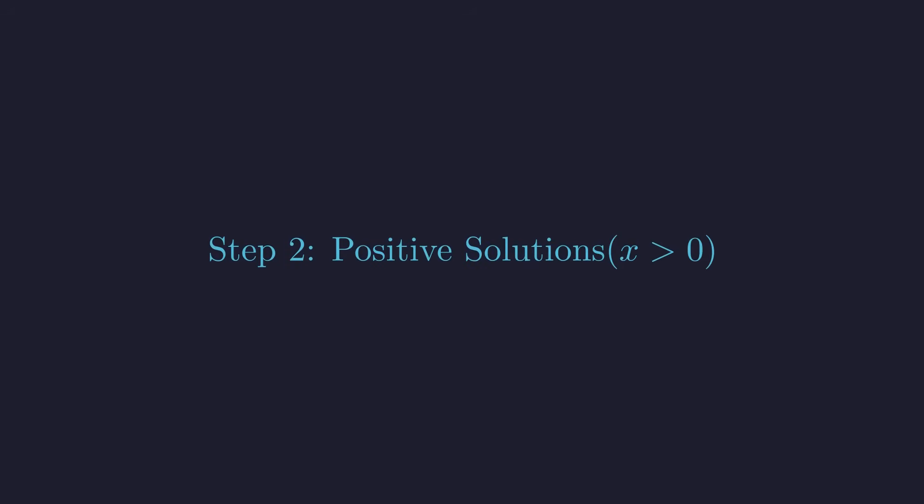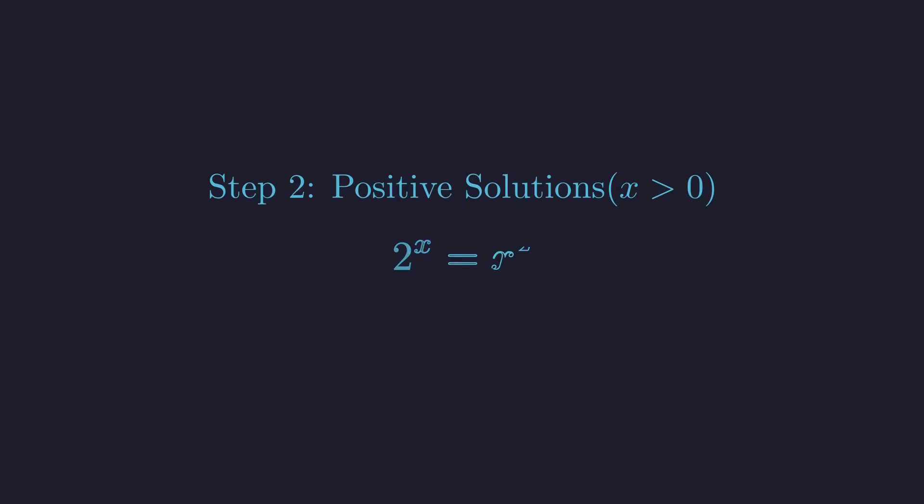Now let's tackle the positive domain, where x is greater than 0. This is the friendly territory where we can safely use logarithms without worrying about domain issues. Let's start fresh with our original equation. Since x is positive, both sides of our equation are positive, which means we can take the natural logarithm of both sides, a powerful move that will help us tame those exponents. This transforms our equation into the natural log of 2 to the x equals the natural log of x squared.